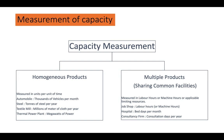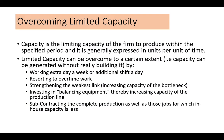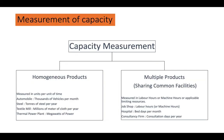Capacity measurement differs for different kinds of products. For homogeneous products it is measured in units per unit of time — for example, automobiles in thousands of vehicles per month, steel in tons per year, textile mills in millions of meters of cloth per year, and thermal power plants in megawatts. For multiple product types it is measured in labor hours or machine hours. In hospitals the limiting resource is beds, so capacity is in bed-days per month; in consultancy firms, consultation days per year.